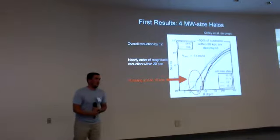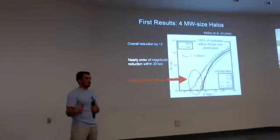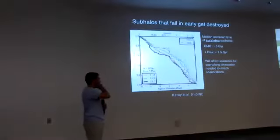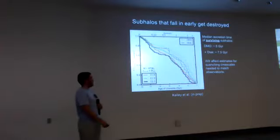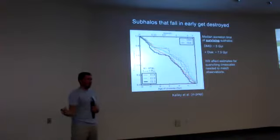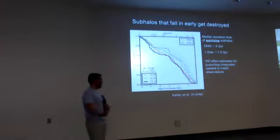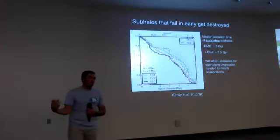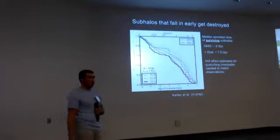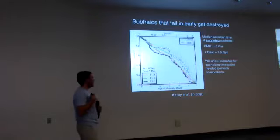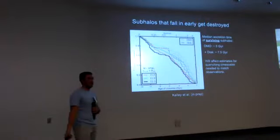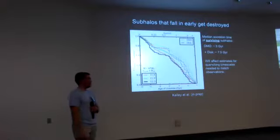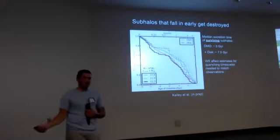So the disk preferentially destroys halos that pass close to the central galaxy. If we look at when these sub-halos were disrupted, we can use the accretion time of the surviving sub-halos — the sub-halos that make it to redshift zero — and look at when they fell into the host halo. The medians tell you that in dark matter-only, half the halos fell in by roughly five gigayears into the age of the universe. But if you add a disk, half of those that survived fell in by seven and a half gigayears — pushing it way later into the age of the universe. This has a good effect on the quenching timescales needed to match the observations we see around the local group.